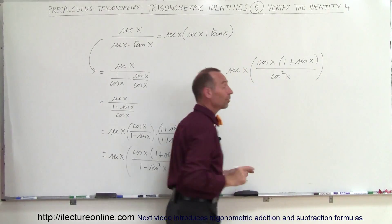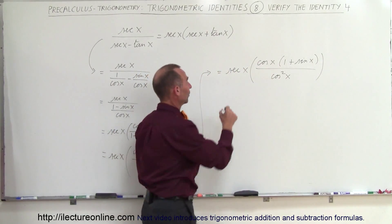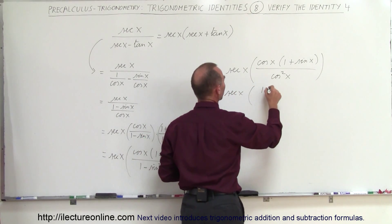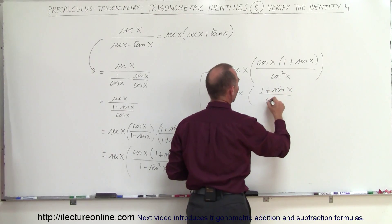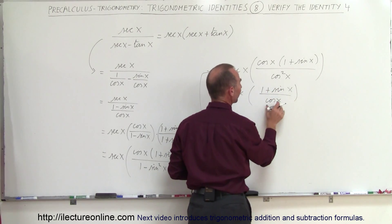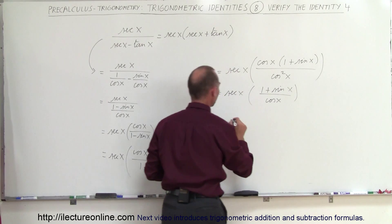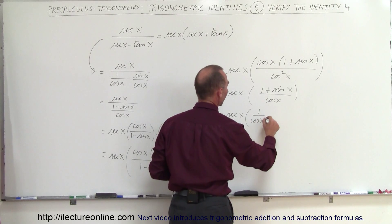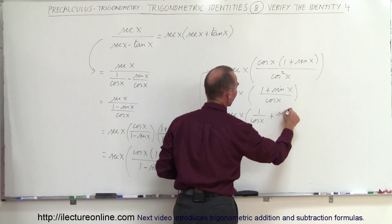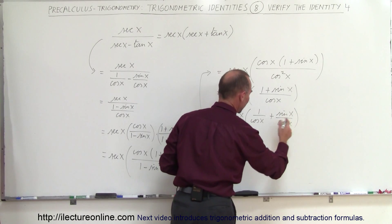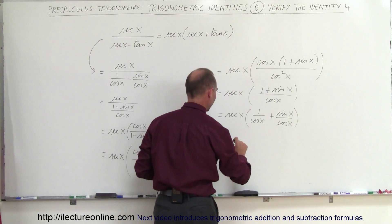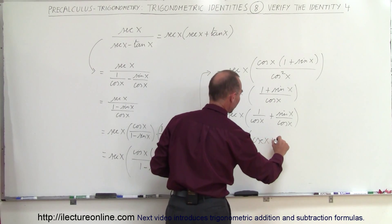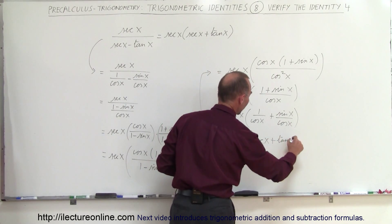Okay, now we're getting closer because now what I can do is I can cancel these out. And so this now becomes the secant of x times 1 plus the sine of x, all divided by the cosine of x. And now we can divide the denominator into the numerator, so this can now be written as the secant of x times 1 over the cosine of x plus the sine of x over the cosine of x. And then if we use the identities, we can now write this as the secant of x times the secant of x plus the tangent of x.